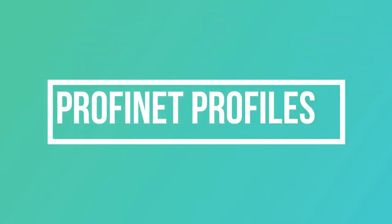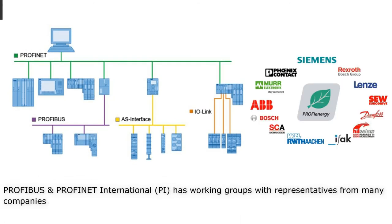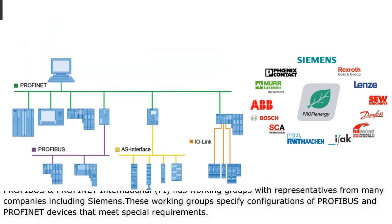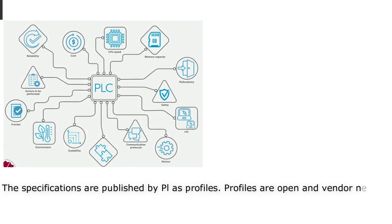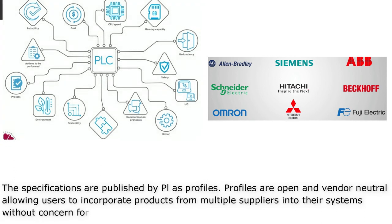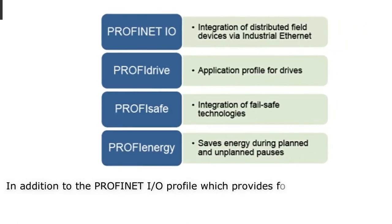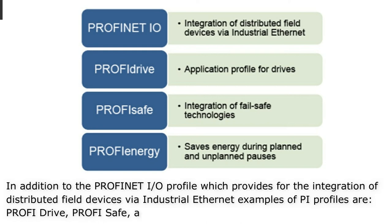Profibus and Profinet International has working groups with representatives from many companies including Siemens. These working groups specify configurations of Profibus and Profinet devices that meet special requirements, published as PI Profiles. Profiles are open and vendor-neutral, allowing users to incorporate products from multiple suppliers without concern for interoperability. Examples of PI Profiles include PROFIdrive, PROFIsafe, and Profile Energy.